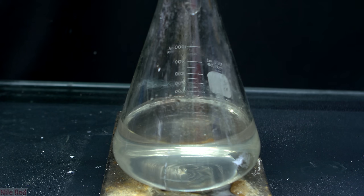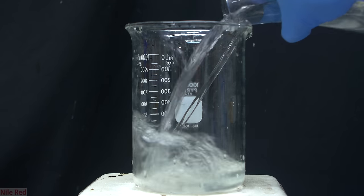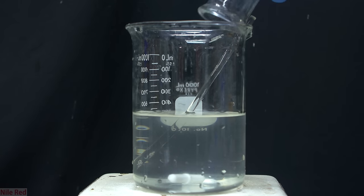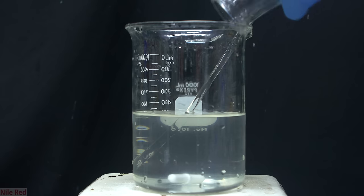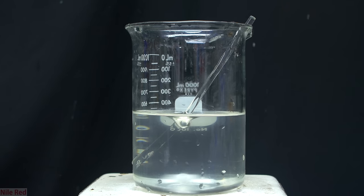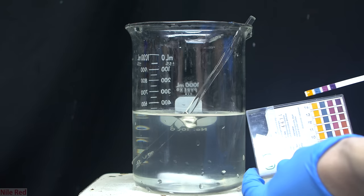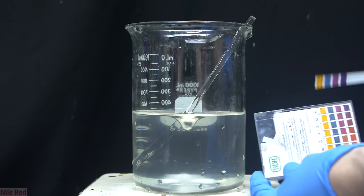When we look at the filtrate below, we should be left with a pretty much clear solution. The solution that we filtered through should contain our sodium salt of our niacin, and I pour this back into a 1 liter beaker. I test the pH of the solution and verify that it's strongly basic, and our goal in the next step is to acidify it to a pH of around 5.